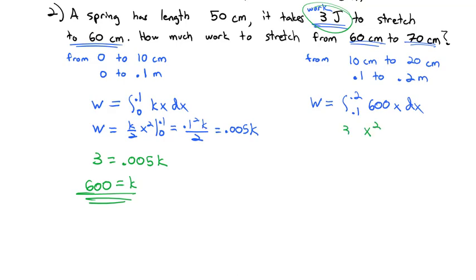This is the integral we need to solve: x²/2 leaves us with 300x² integrated from 0.1 to 0.2. So we have 300 times (0.2² - 0.1²), and we end up with 9 joules of work to stretch from 60 to 70 centimeters. It takes more work because there's more tension on the spring when going from 60 to 70 than from 50 to 60.